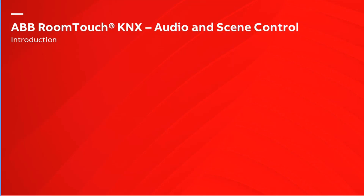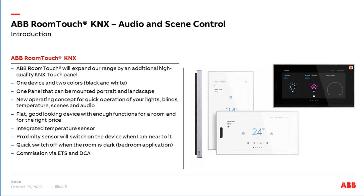Let's start with a short introduction about the ABB RoomTouch. Last month we launched this new ABB RoomTouch KNX panel. The device is available in two colors — black and white — and can be mounted in portrait mode or landscape mode. The ABB RoomTouch offers enough functions for a room like a meeting room, hotel room, or residential building, with controls for lights, blinds, audio, scenes, temperatures, and value display. Additionally there is a temperature sensor and proximity sensor integrated, plus screen savers and more.